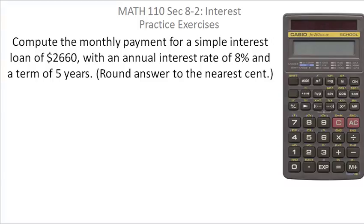Compute the monthly payment for a simple interest loan of $2,660 with an annual interest rate of 8% and a term of 5 years. Round your final answer to the nearest cent.